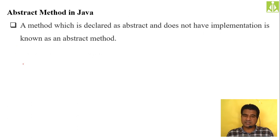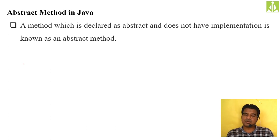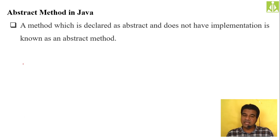Abstract methods in Java: a method declared as abstract does not have implementation — it will not have any body. Methods without a body are called abstract methods. If you are not giving any body, remember to mention the abstract keyword before the method so the compiler considers it abstract.